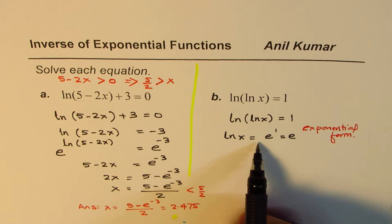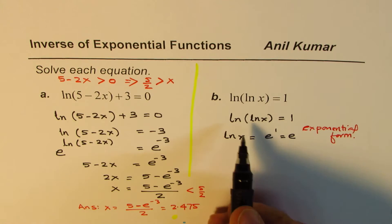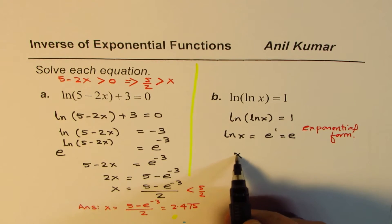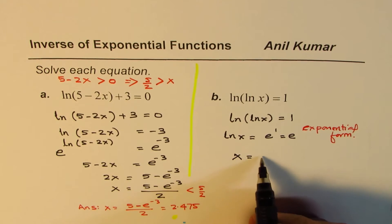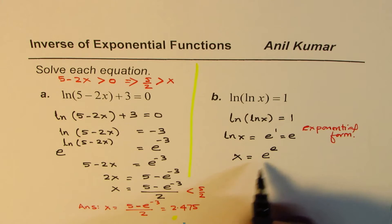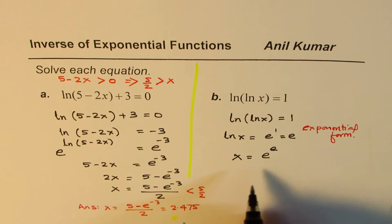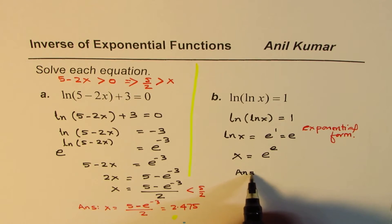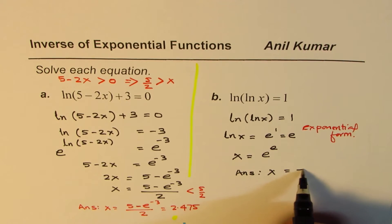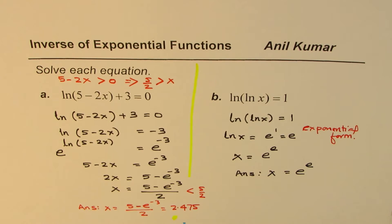Now again, ln x equals e means it is to the base e, so I can write x equals e to the power of e. That becomes the solution: x equals e to the power of e. You can use your calculator to check the result.